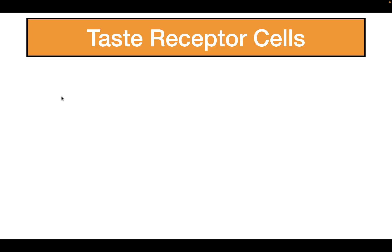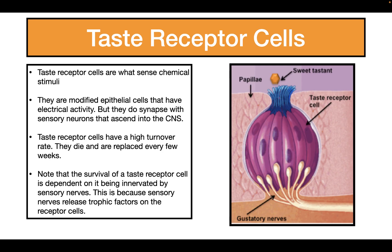The taste receptor cells send chemical stimuli — they are modified epithelial cells with electrical activity, innervated by sensory nerves that ascend into the central nervous system. These cells also have a high turnover rate, meaning they die and are replaced every few weeks. Importantly, taste receptor cells are dependent upon sensory nerves, because the sensory nerves release trophic factors that prevent them from atrophying. So a taste receptor cell must be innervated by a sensory nerve to survive.